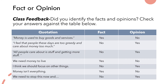Number three: 'All people care about is stuff and getting more stuff.' What the writer has done is made a very general statement about all of us as a society. I'm sure a lot of people do care about getting more stuff, but not everyone is that way inclined — so it is an opinion, not a fact. Number four: 'We need money to live' — that would be a fact. Yes, you could argue we only need food and shelter, but in order to actually get those things, money is now a necessity.